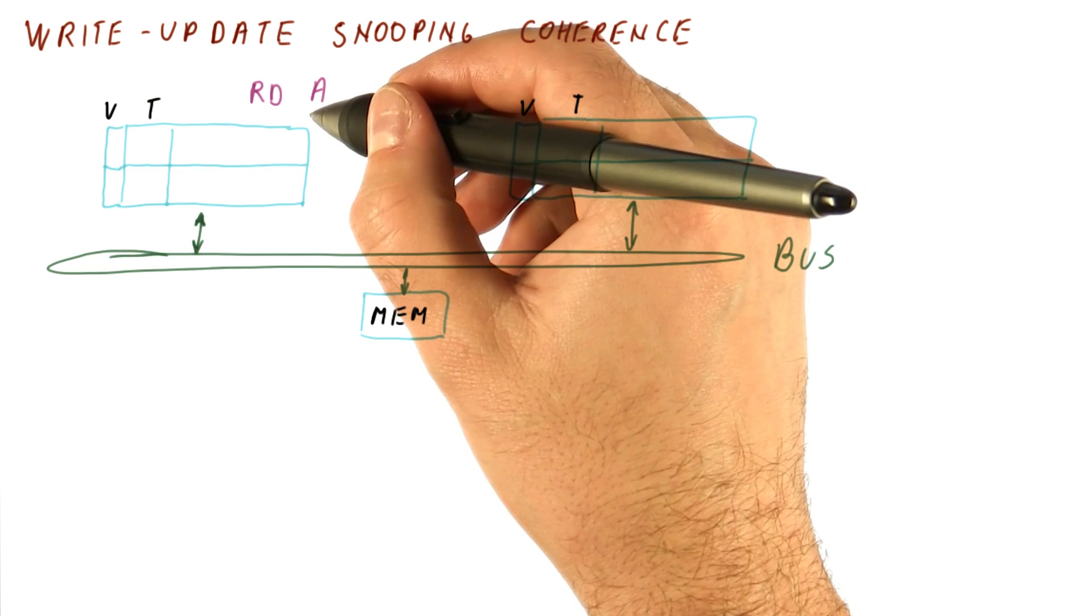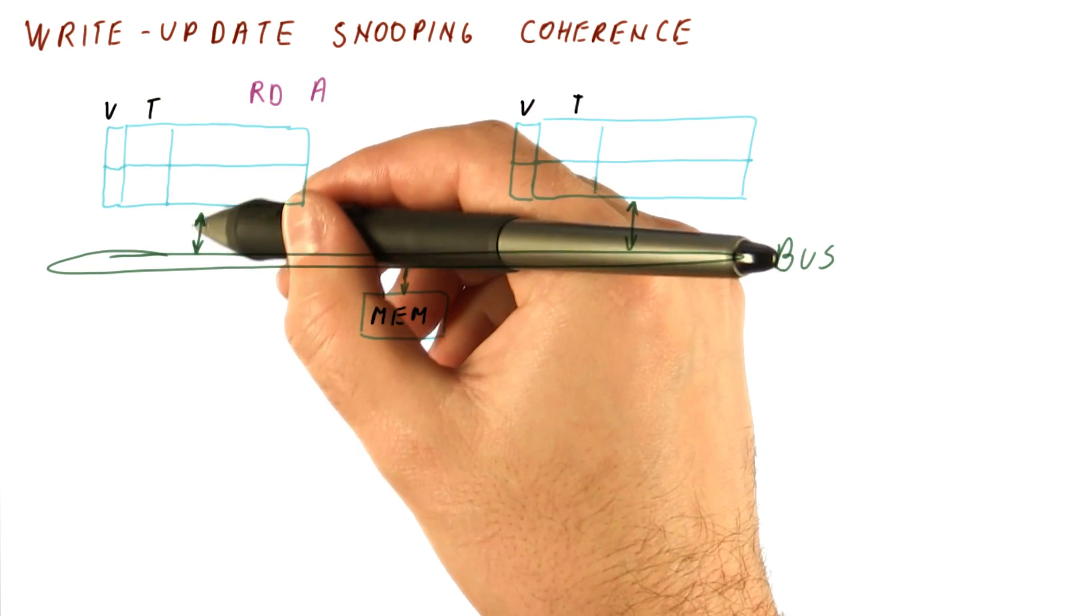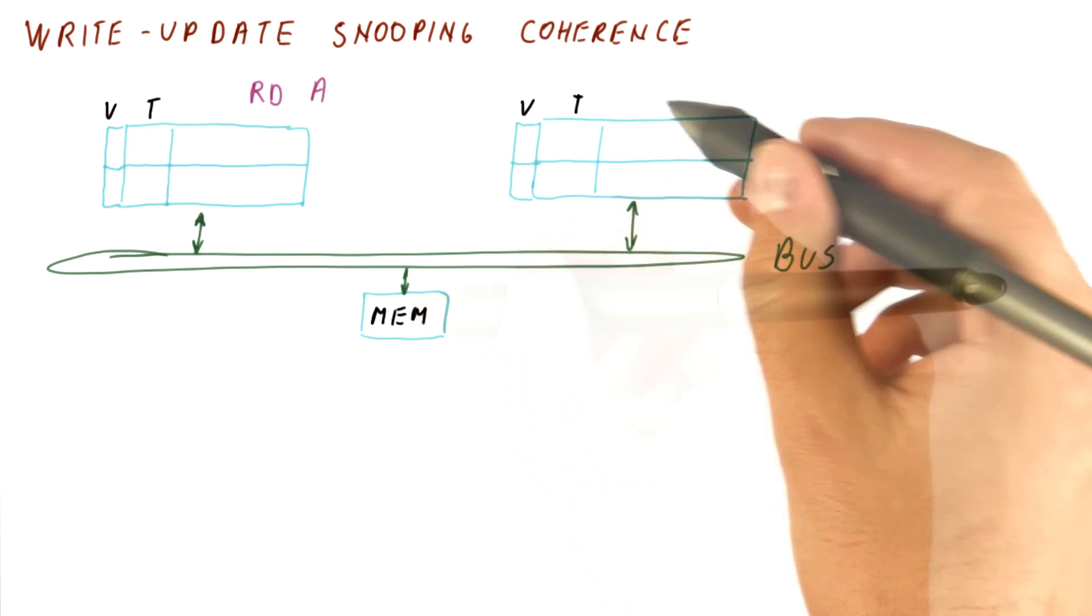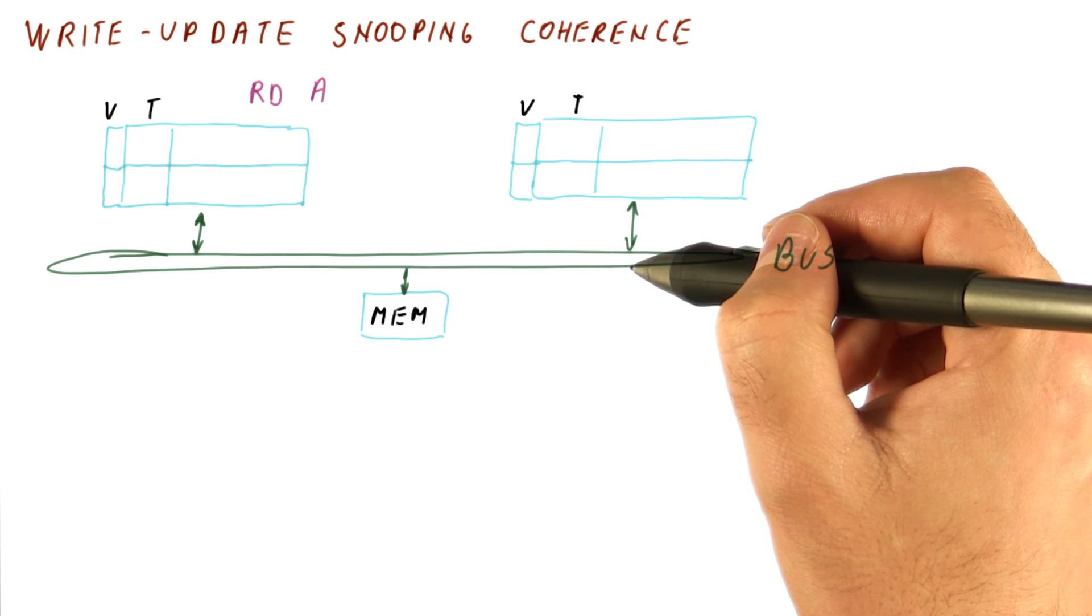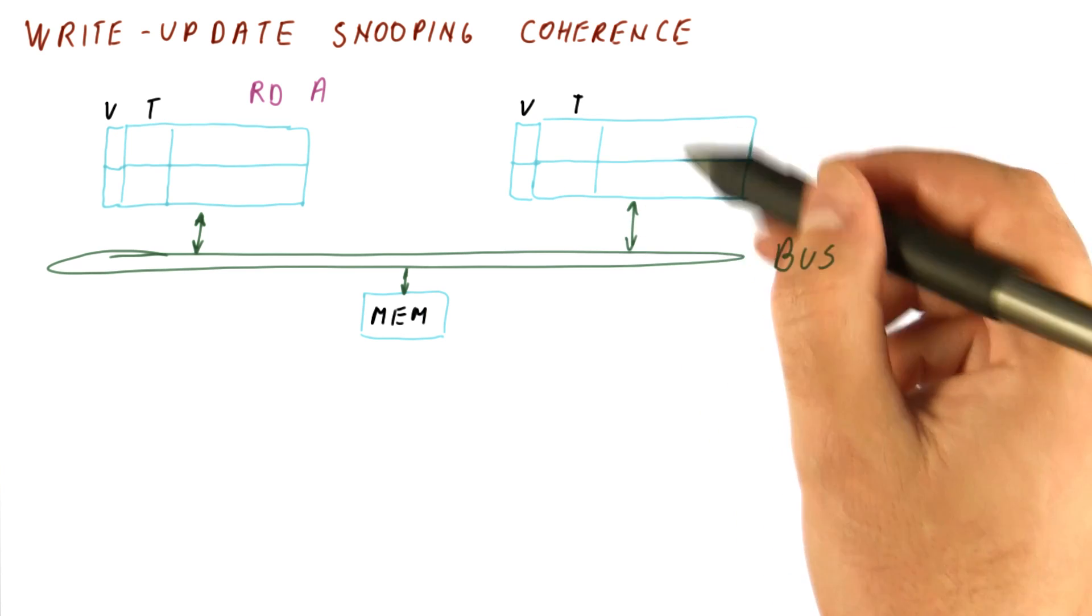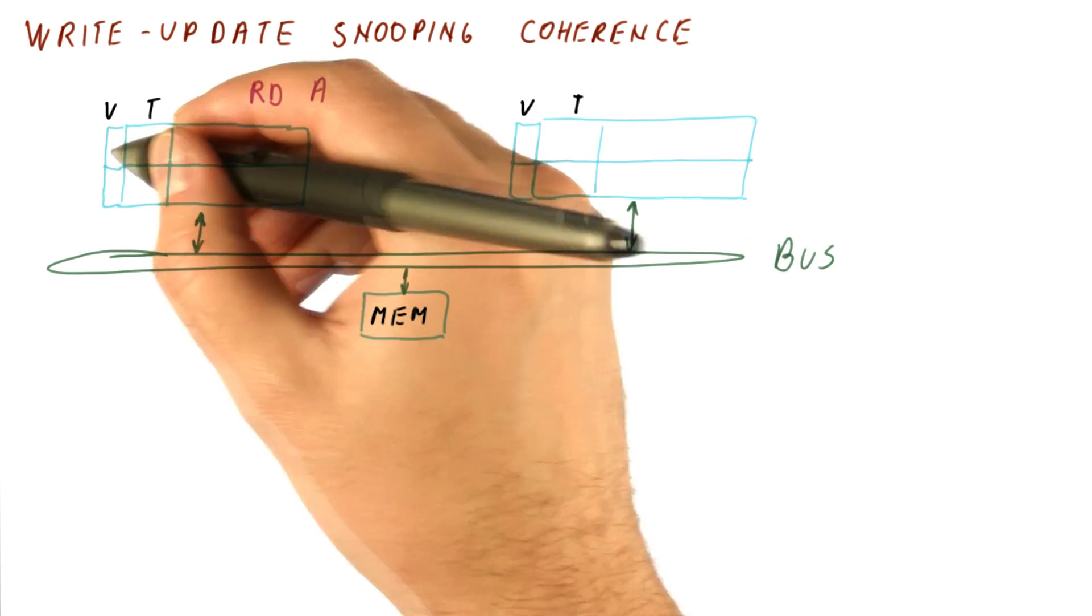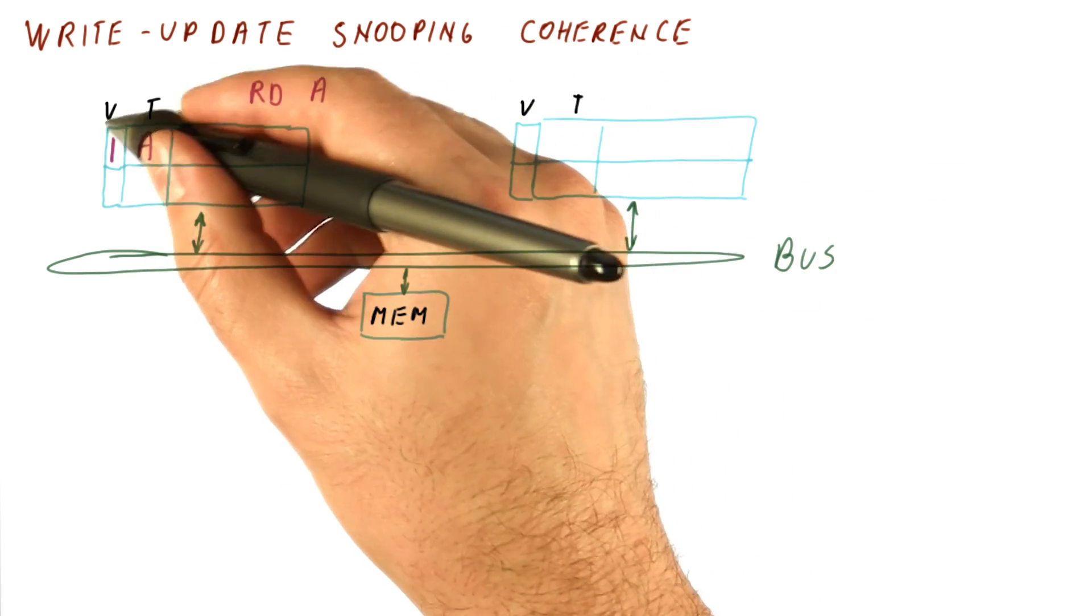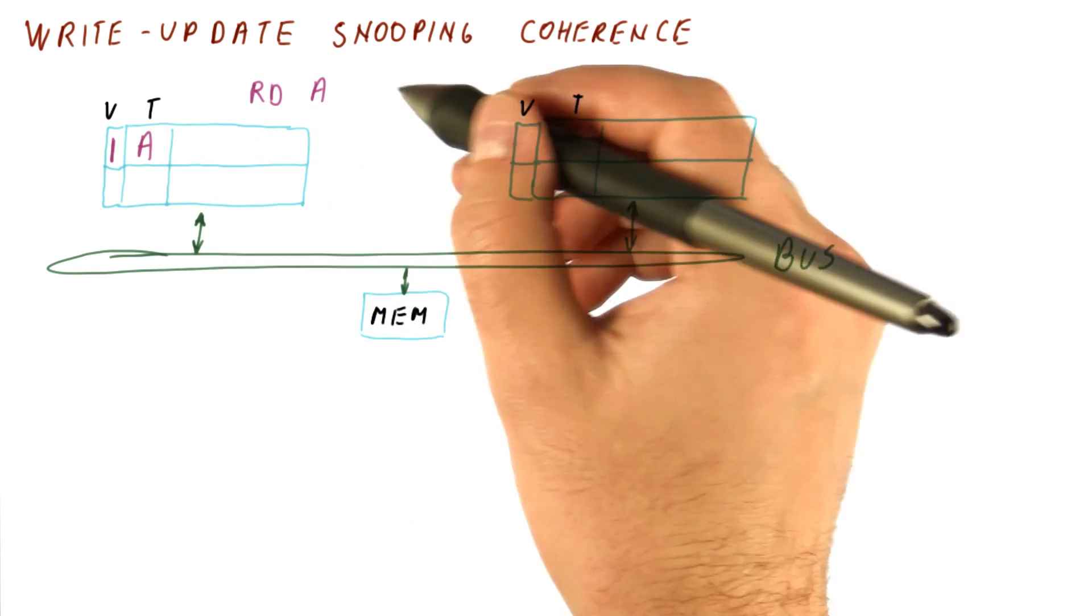Now let's say this processor reads something in block A. We have a cache miss here, so we send the request to memory. This cache is always monitoring what's going on on the bus, but it's only interested in writes, so this read is seen and ignored by this cache. The data for A comes back from memory, and now we put this block in the cache. The block becomes valid, and the tag indicates this is block A.